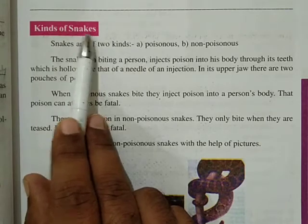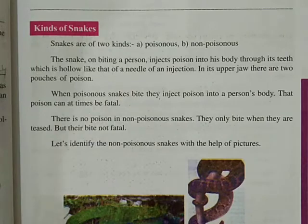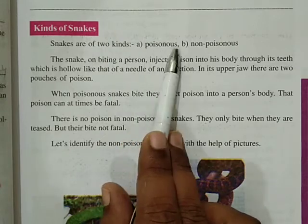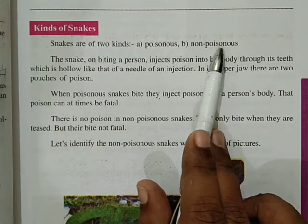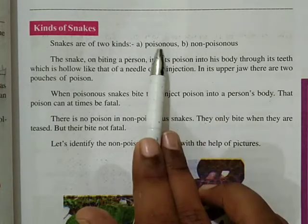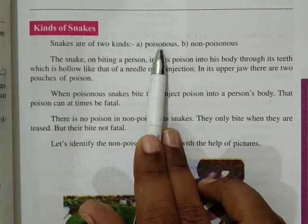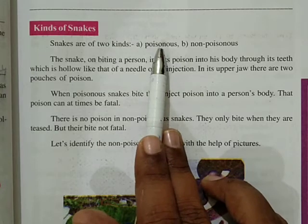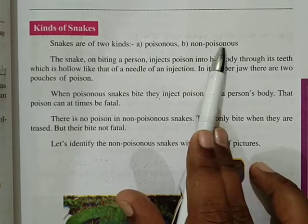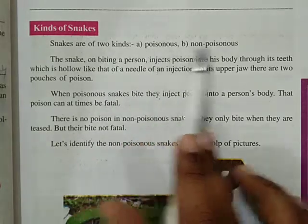Kinds of snakes — saanpon ke prakaar. Saap kitne prakaar ke hote hain? Snakes are of two kinds: poisonous and non-poisonous. Saap do prakaar ke hote hain: poisonous and non-poisonous. Poisonous means jis mein zeher hota hai — wiss hota hai. Poison means kya hota hai? Wiss. Jis mein poison hota hai, as a snake jiske kaatne se vyakti mar jata hai, use poisonous bolenge. Non-poisonous: jis mein wiss nahin hota, jis mein zeher nahin hota. So there are two kinds of snakes: poisonous and non-poisonous.